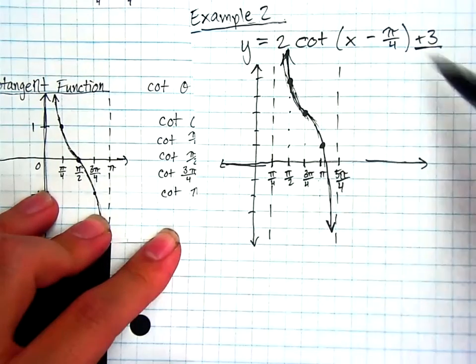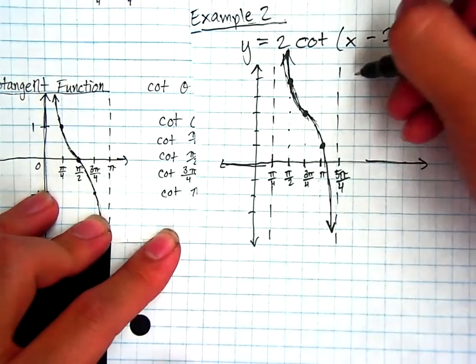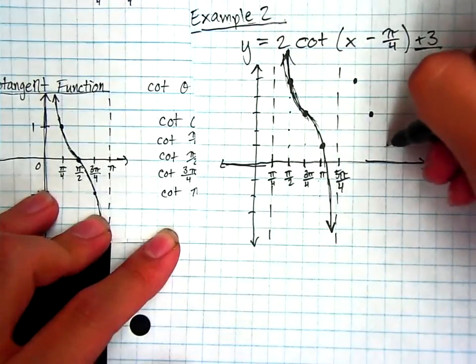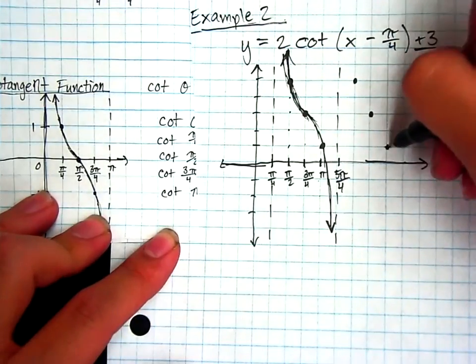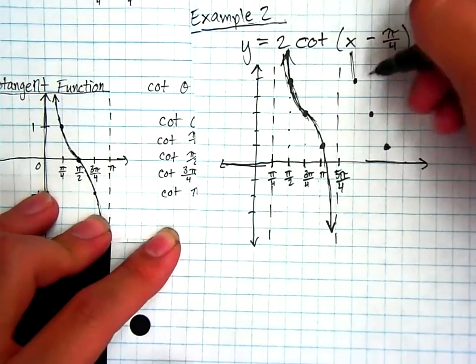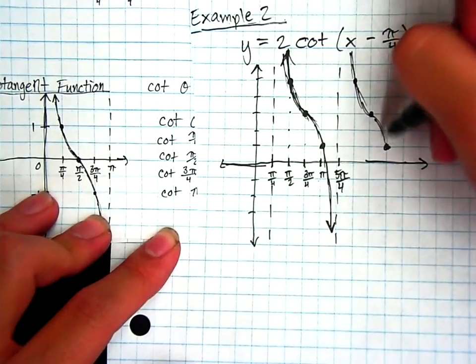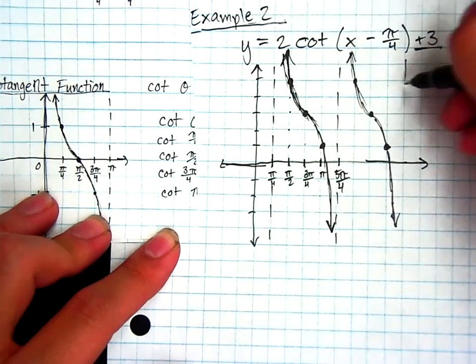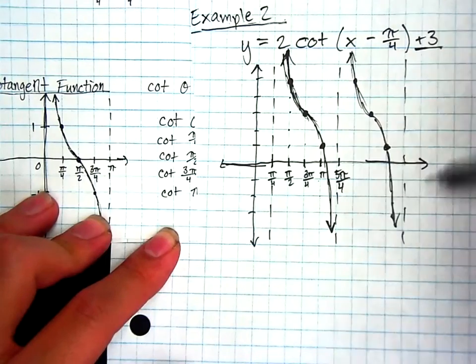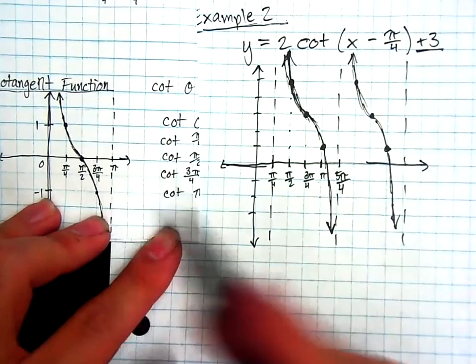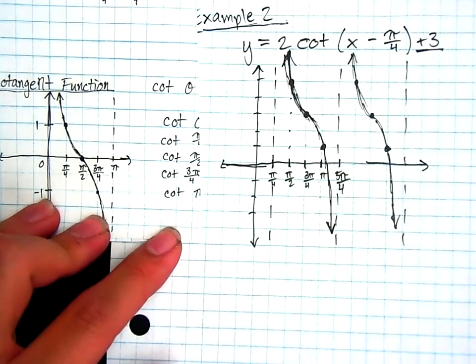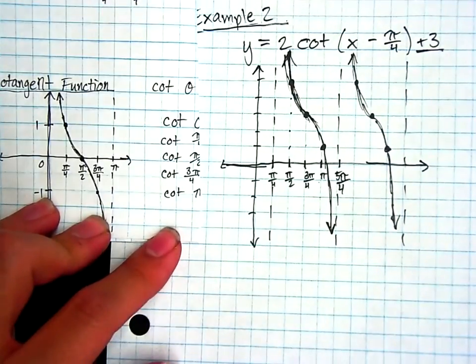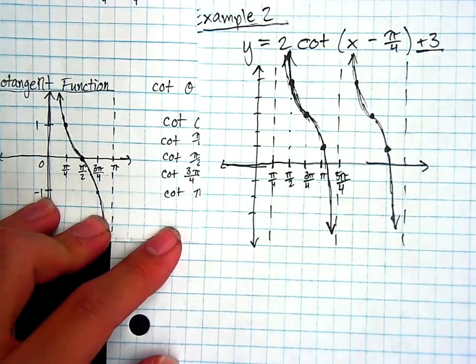And actually, if I were to draw this, it would continue on over here as well and go on and on for many, many periods, because it just keeps on going all the way through the x-axis. So there is my transformed cotangent function. Again, just using the parent function and our knowledge of the transformations. All right, so go ahead, rewind, replay as needed. Otherwise, move on to the Google Forms. And we'll see you guys tomorrow.